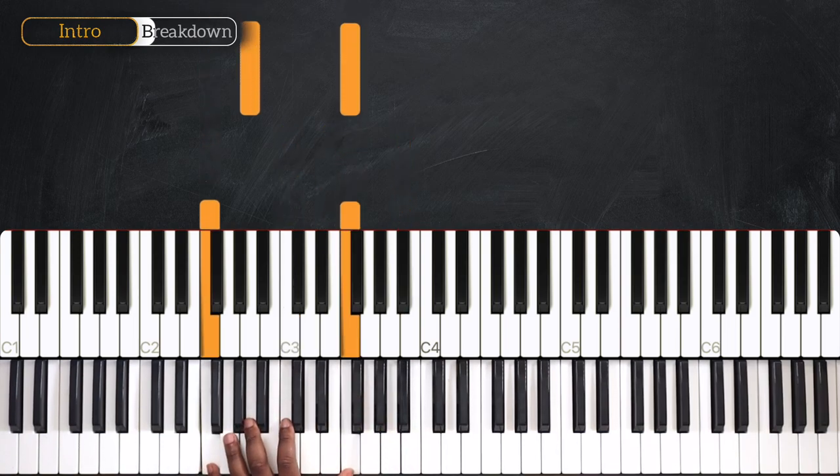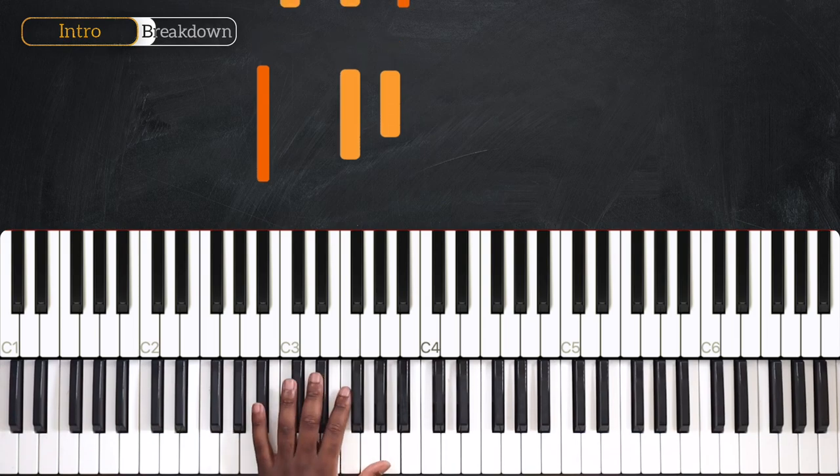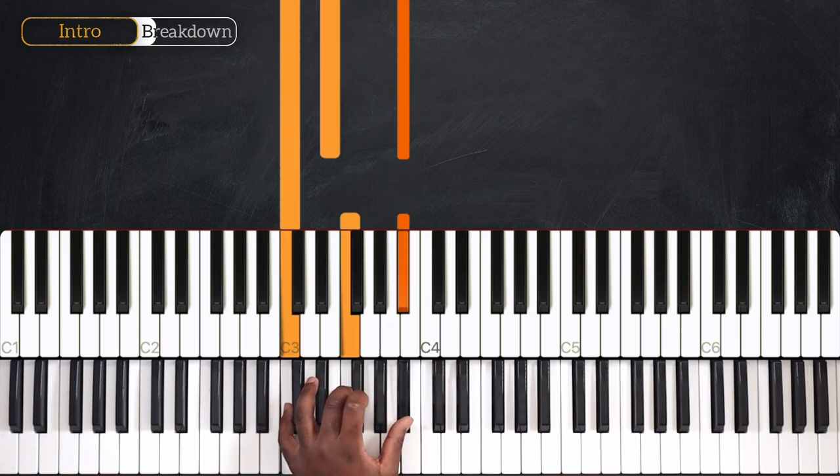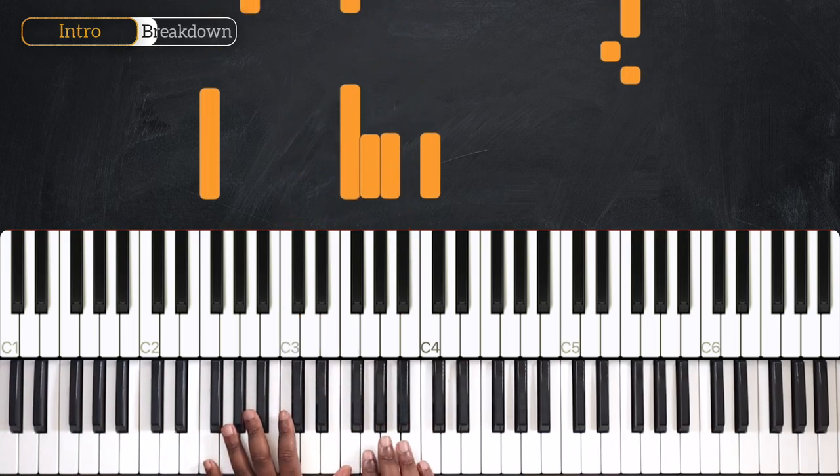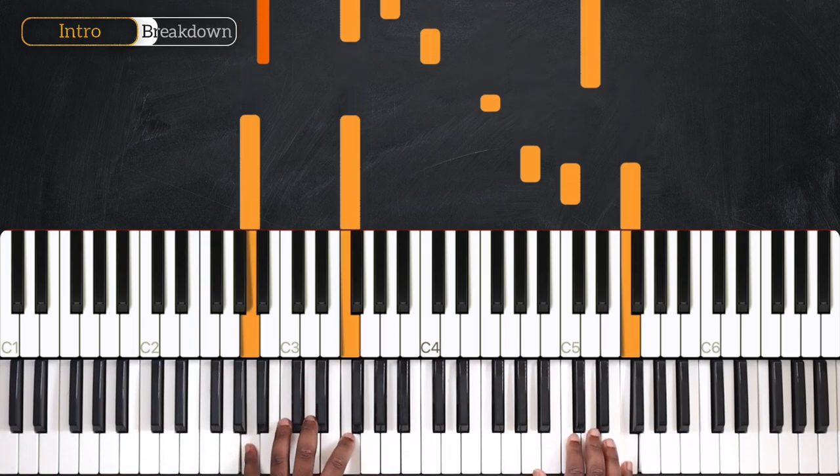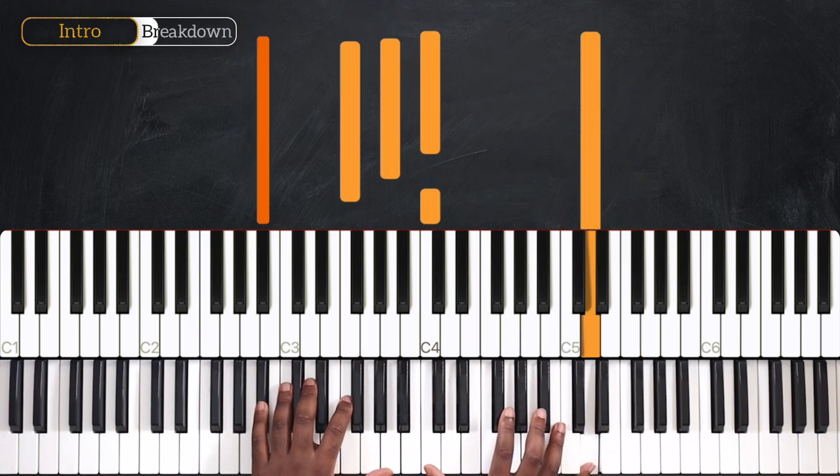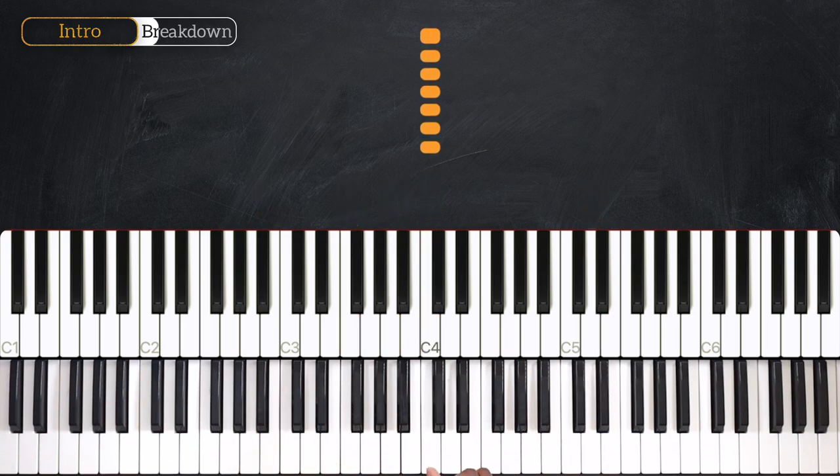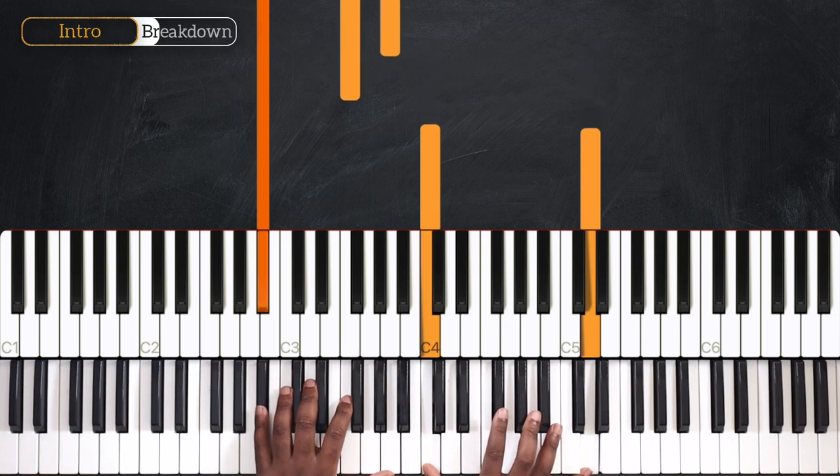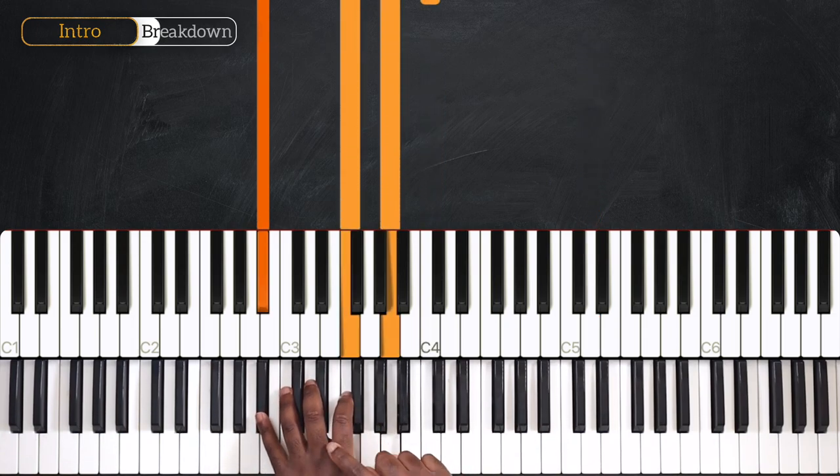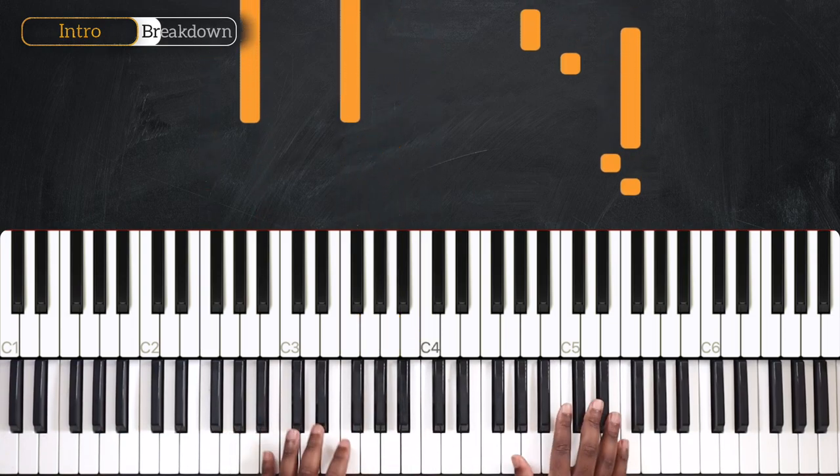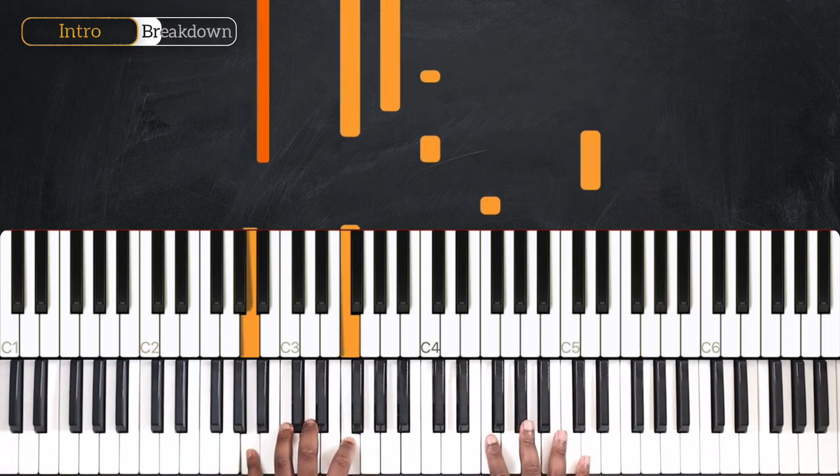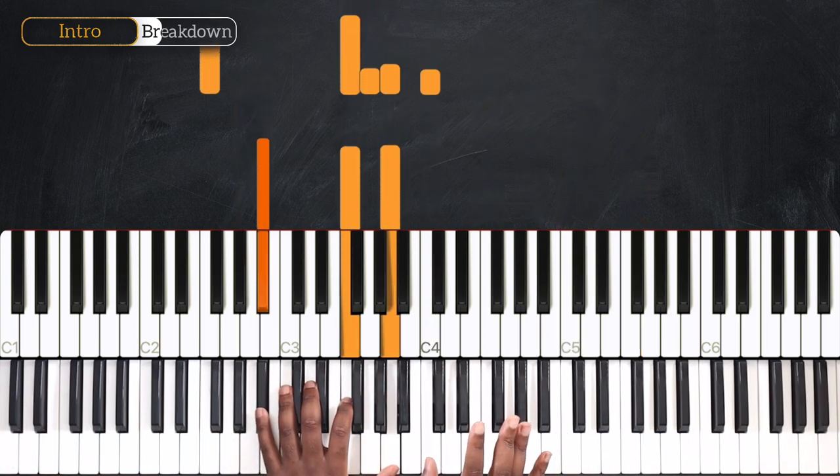So that's for the left. Now we can add the right hand. Remember, we're playing this C on the first beat, and after playing F and A on the left, I'm going to replay the same C.